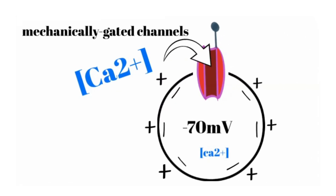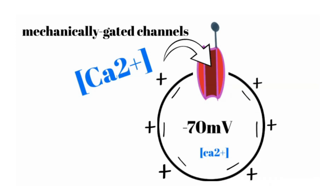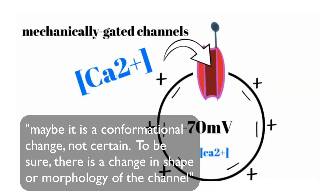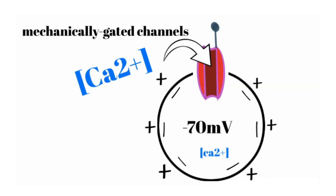When the channel opens under mechanical force, you can see the channel changes shape — previously it was wide and short in the resting state, and now it's narrow and tall. This physical change within the protein is what opens the gate. I would not even call this a conformational change in the traditional sense — it is physically pulling or manipulating that protein channel, which results in the opening of the gate and movement of calcium down its electrochemical gradient.